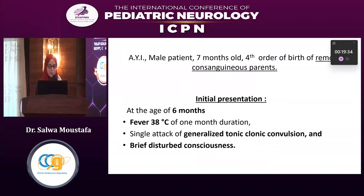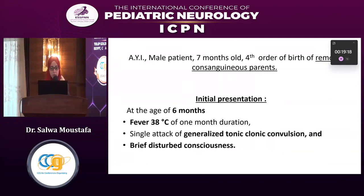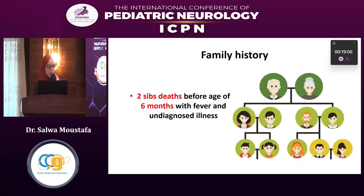I will present a case of a male patient following in our clinic, seven months old, the third birth order of remote consanguineous parents. At initial presentation at six months of age, he had fever of 38°C for one month duration, followed by a single attack of generalized tonic-clonic convulsion and brief attacks of disturbed consciousness. Family history revealed two sibling deaths before the age of six months with fever and undiagnosed illness.